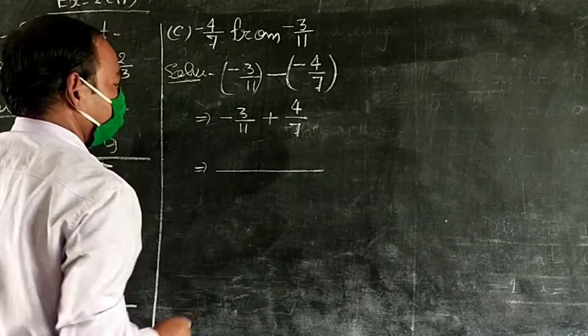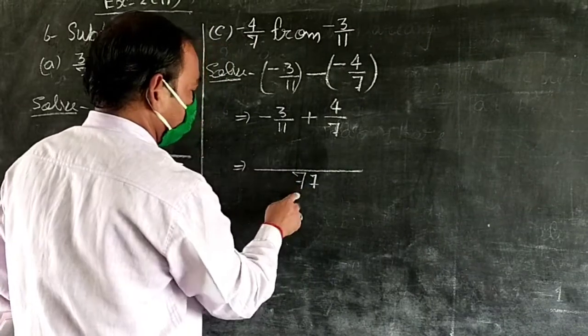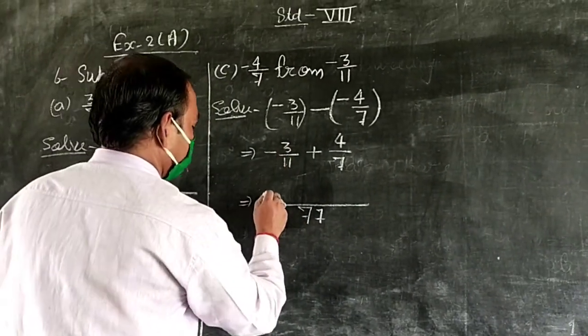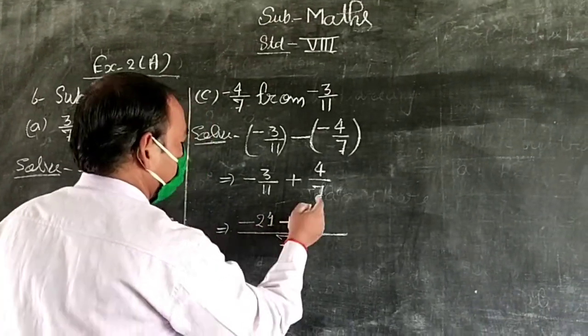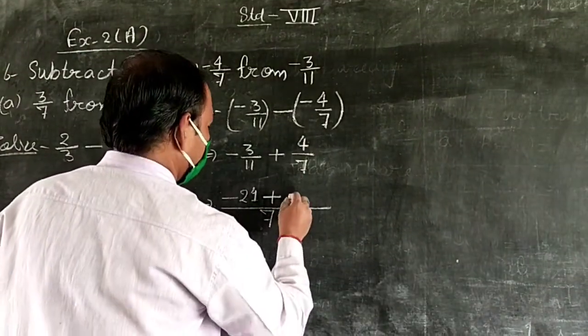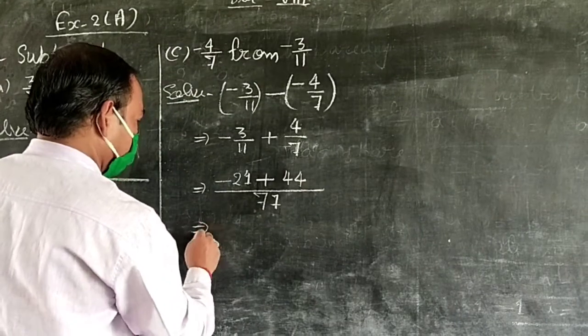LCM of denominators 11 and 7 is 77. So 7 times 3 equals 21, giving minus 21 upon 77. Plus 11 times 4 equals 44 upon 77.